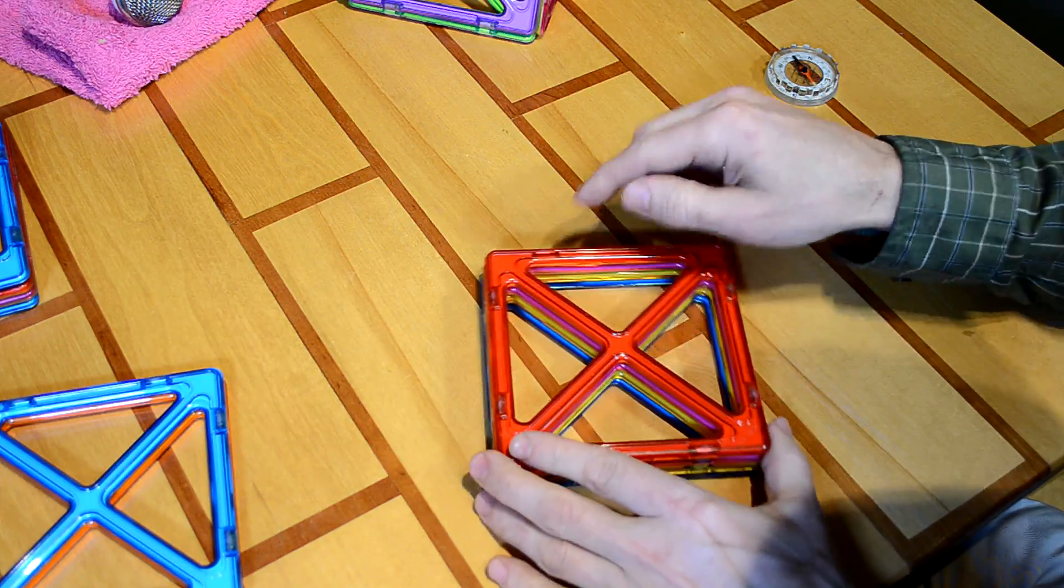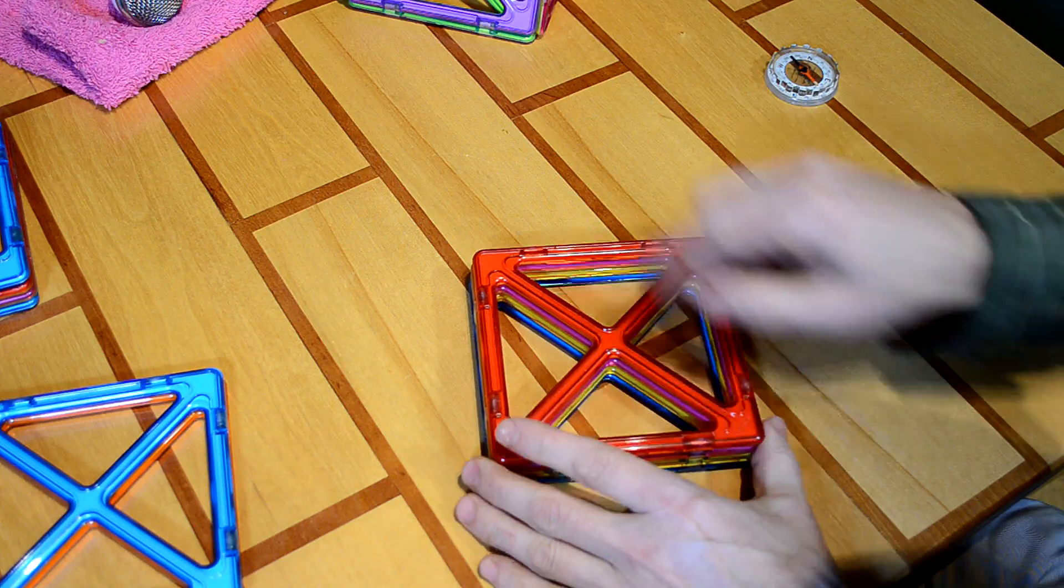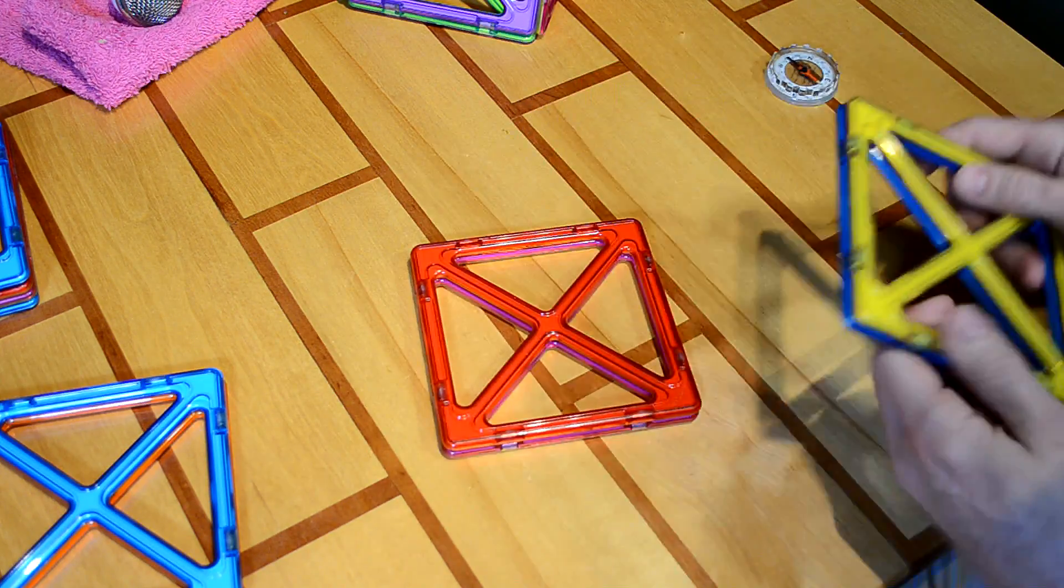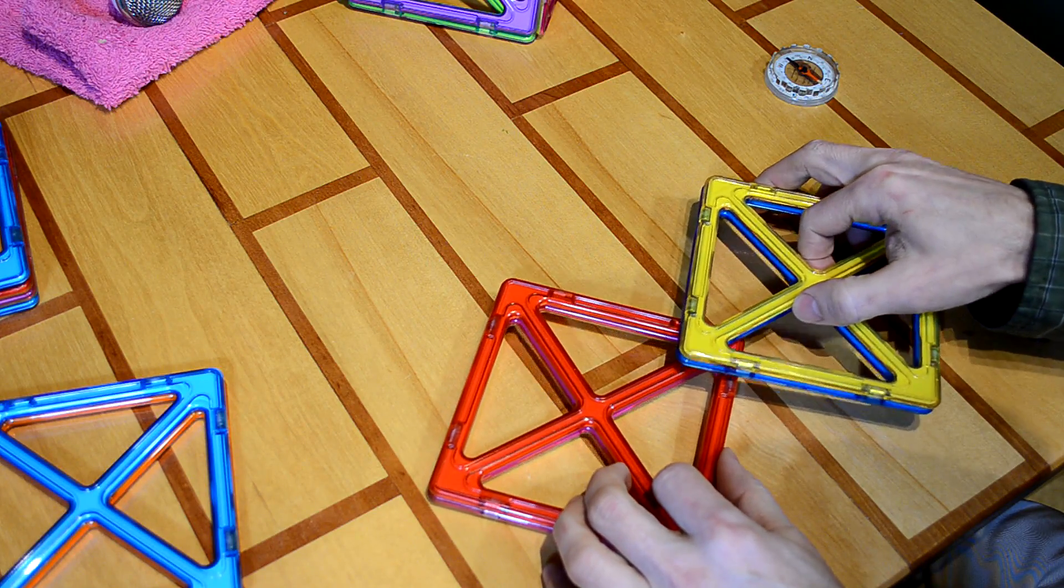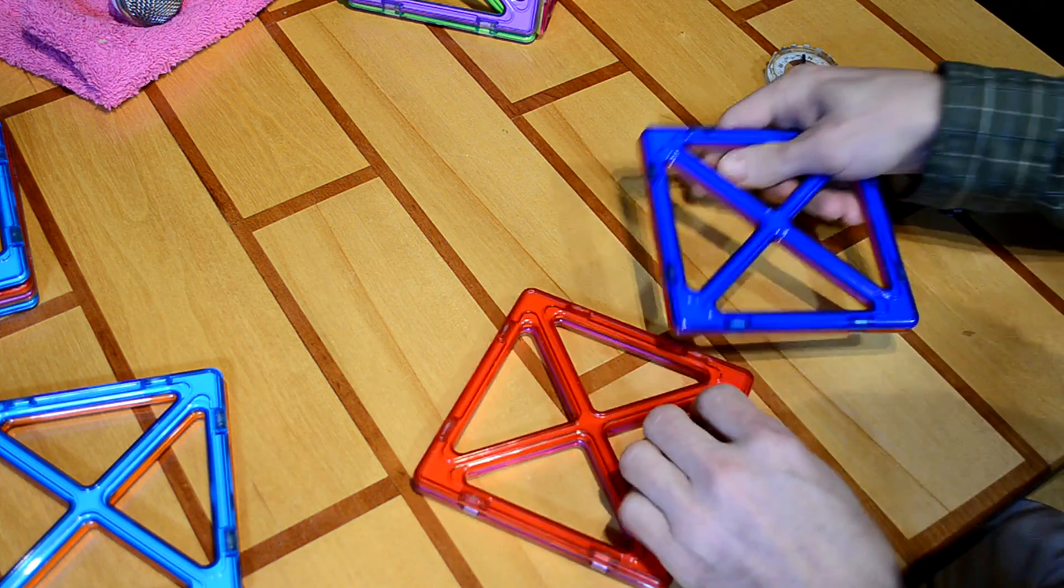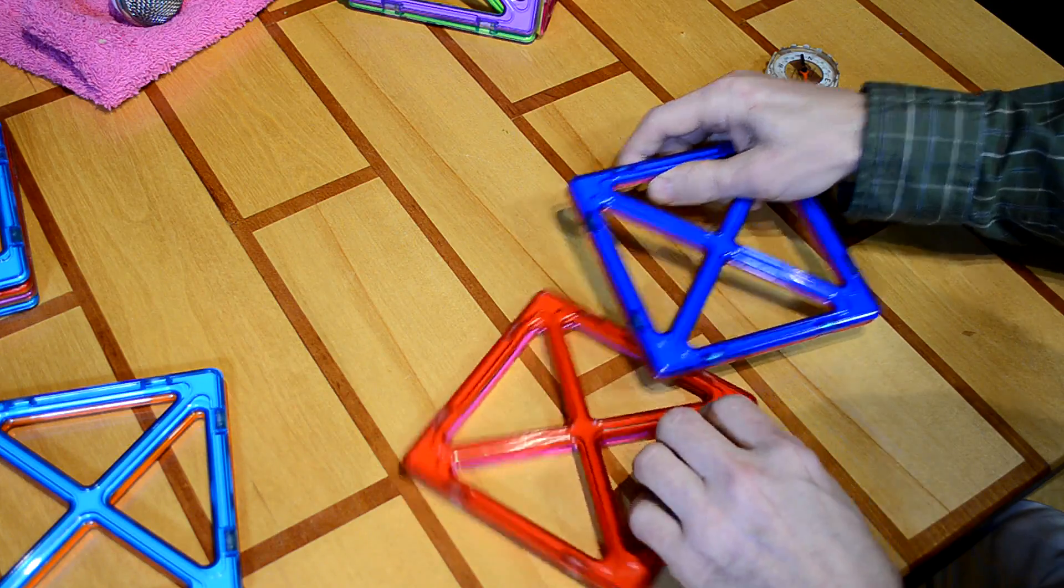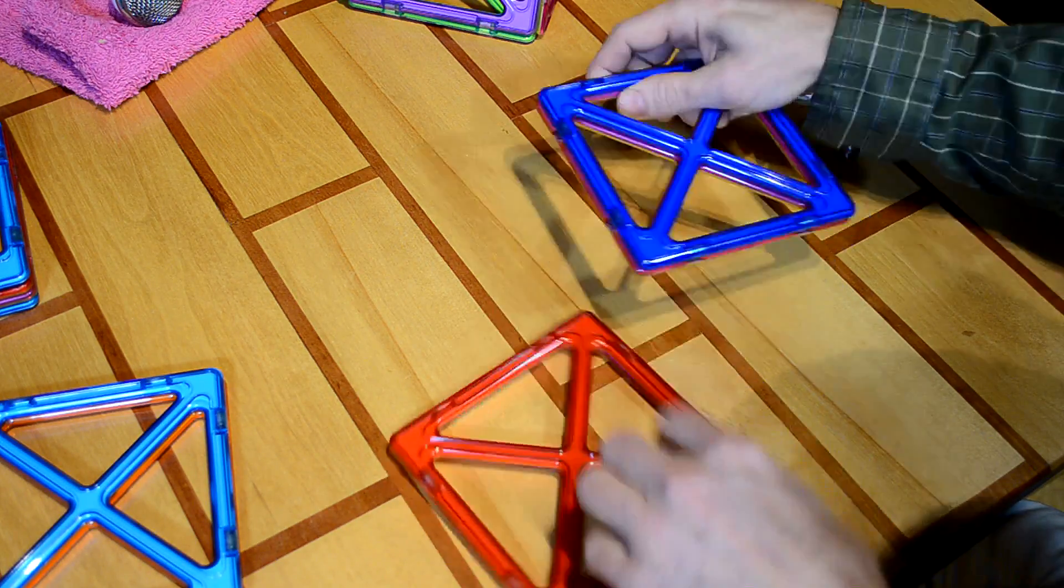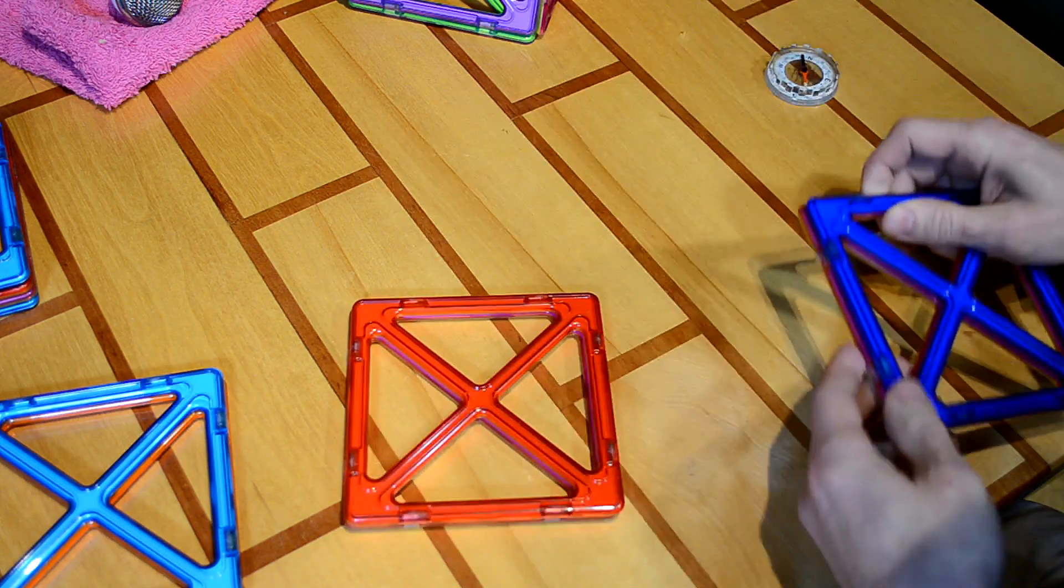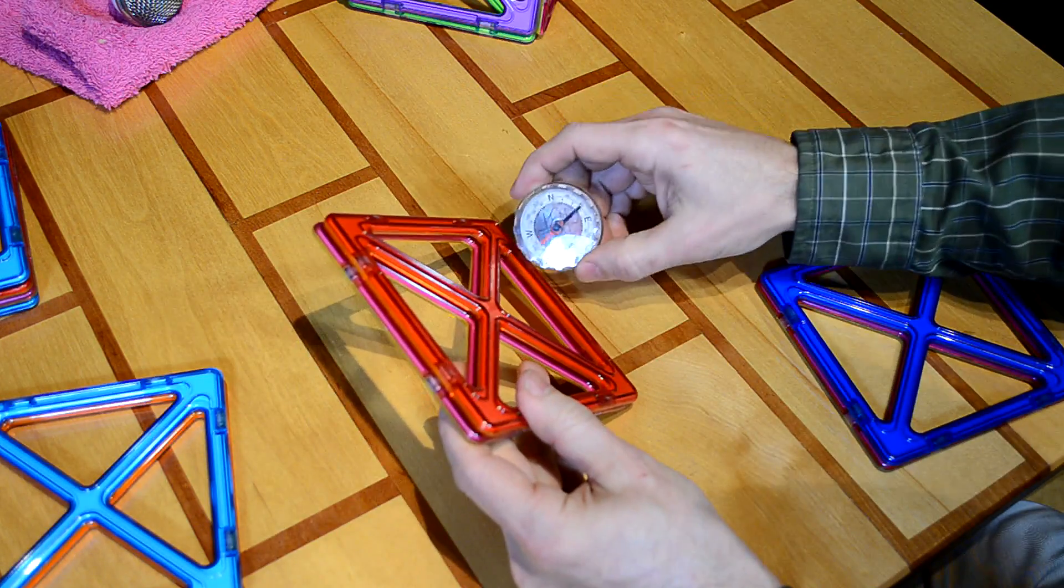A more usual orientation is that these are north-south, north-south, north-south. So, let's make that orientation. Which means, right now, these are all good with each other. I'm gonna flip over half the magnets on here. And, now, these should be north-south alternating.